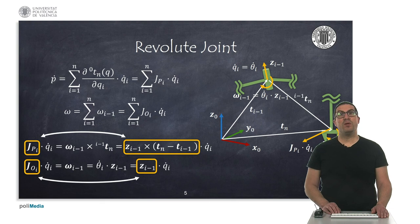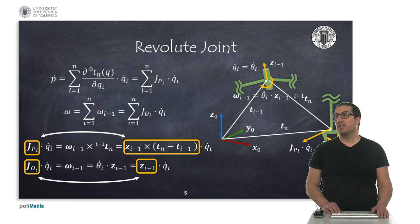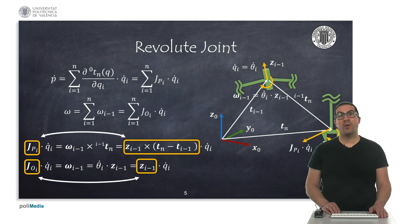On the other hand, revolute joints rotate around the axis z_{i-1} with a magnitude q_i-dot, that is the angular velocity. In that case, the linear velocity observed at the end effector is the consequence of the rotation vector t_n with respect to the axis z_{i-1} around the origin o_{i-1}. It is well known that in that case the linear velocity is therefore the vector z_{i-1} crossed with the vector translation t_{i-1}, which is actually the difference between the position of the end effector and the position of the origin o_{i-1}. The angular velocity at the end effector will be the angular velocity of the joint.